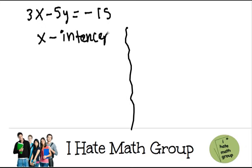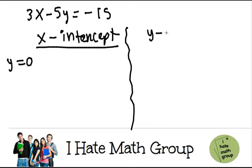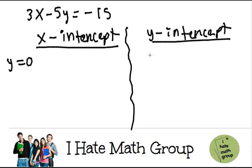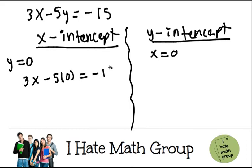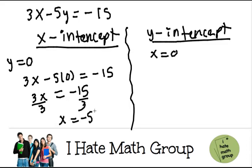This is the trick. If you're finding the x-intercept, just make y equals 0. And if you're finding the y-intercept, basically what you're going to do is make x equals 0. It's always the opposite. So here I'm going to do 3x minus 5 times 0 equals negative 15. 3x, and then negative 5 times 0 is just 0, equals negative 15. I divide by 3, and I get that x equals negative 5.